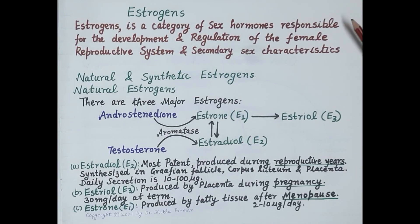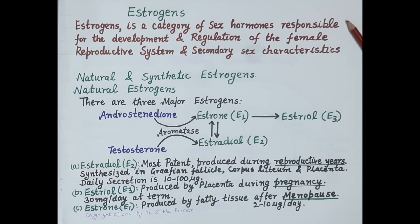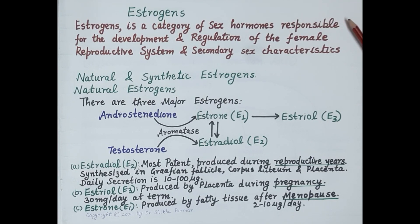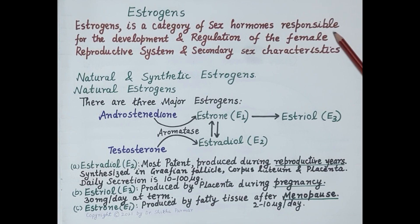Hello students. Today's video is an introduction to estrogens — that is, what are estrogens. We'll talk about natural estrogens produced in the body, and further we will classify estrogens as natural estrogens and synthetic estrogens. Estrogens is a category of steroidal sex hormones responsible for the development and regulation of the female reproductive system and also secondary sexual characteristics.